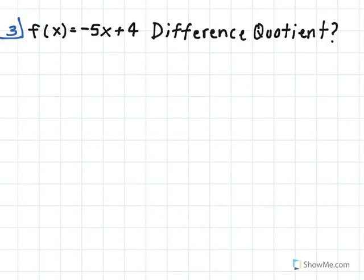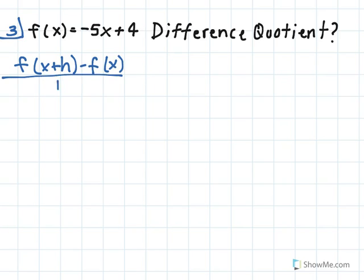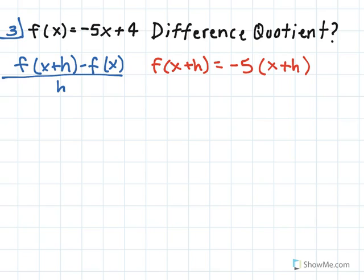Our third problem deals with difference quotients. We're given the function f of x equals negative 5x plus 4 and asked to find the difference quotient. Remember that the difference quotient is f of x plus h minus f of x, all over h. Our first step would be figuring out what f of x plus h is. In order to find that, we just need to plug in x plus h for x in our function, so we would have negative 5 times the quantity x plus h, plus 4, which simplifies to negative 5x minus 5h plus 4.